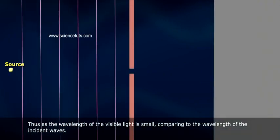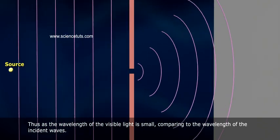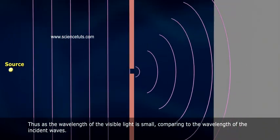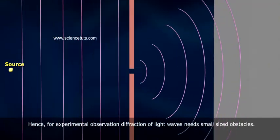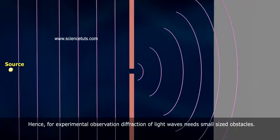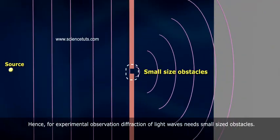As the wavelength of visible light is small compared to the wavelength of the incident waves, for experimental observation, diffraction of light waves needs small-sized obstacles.